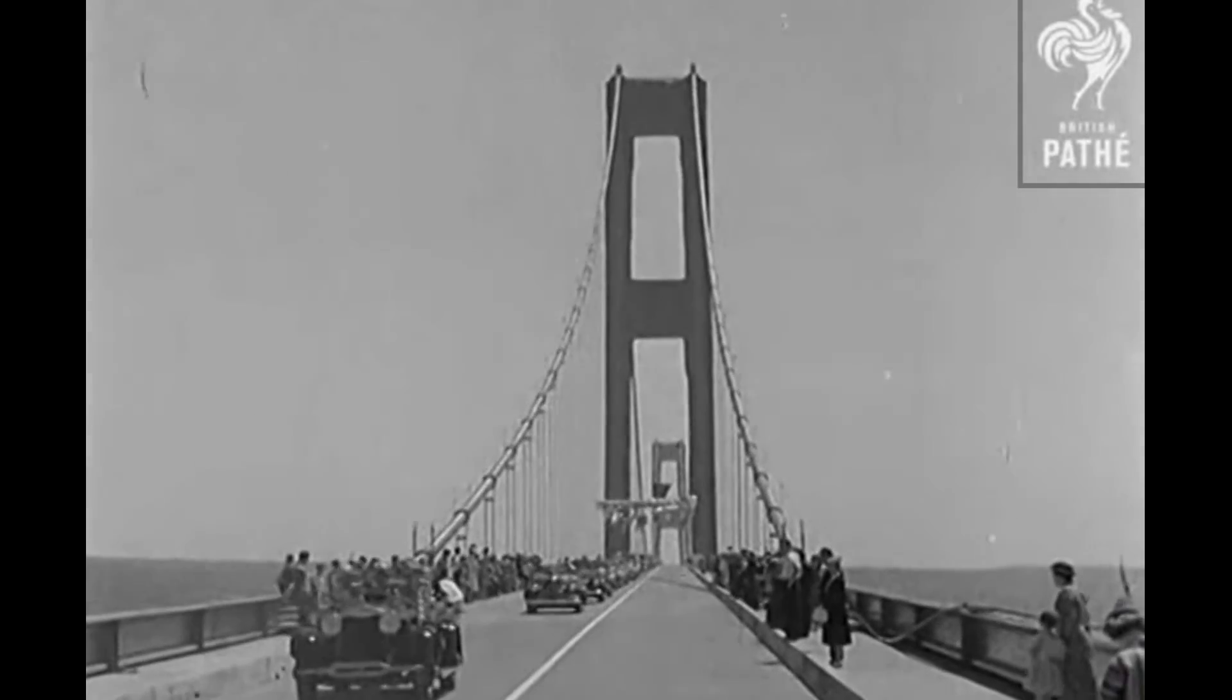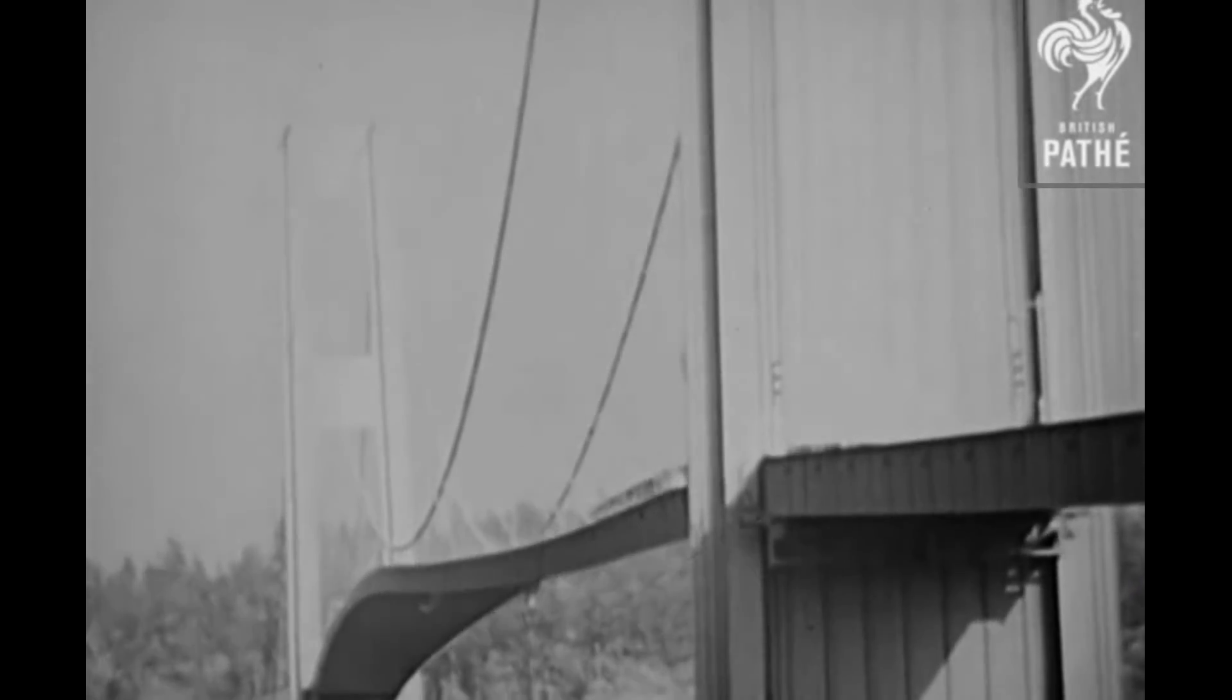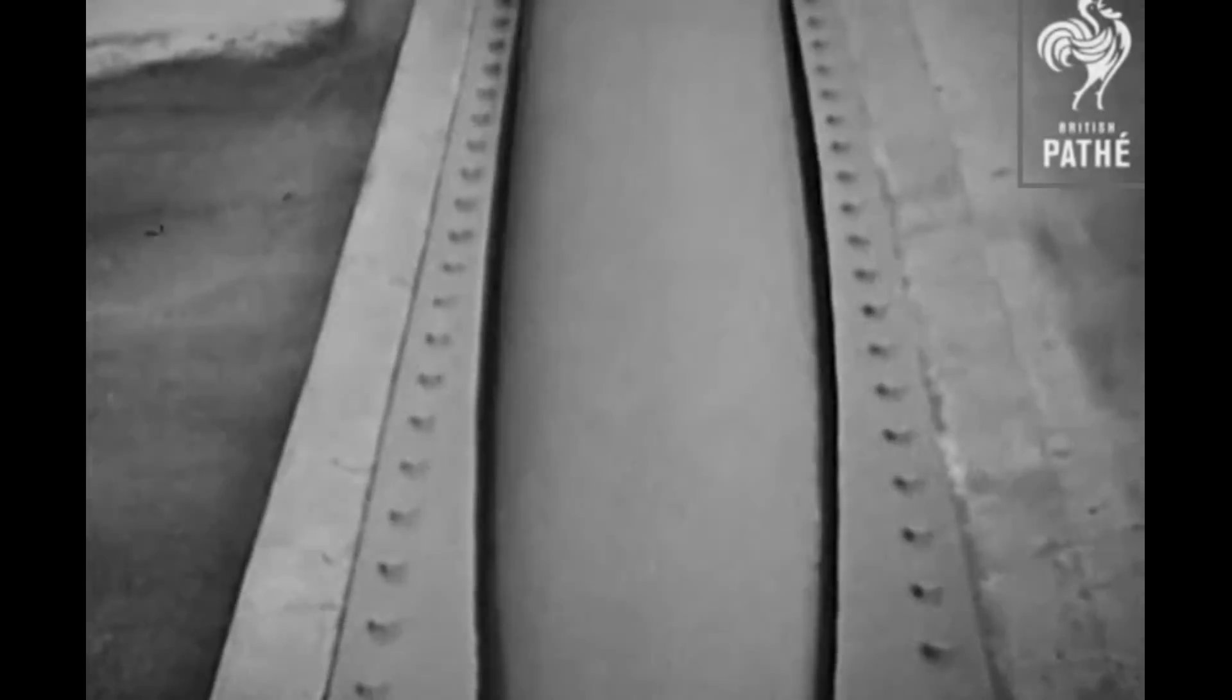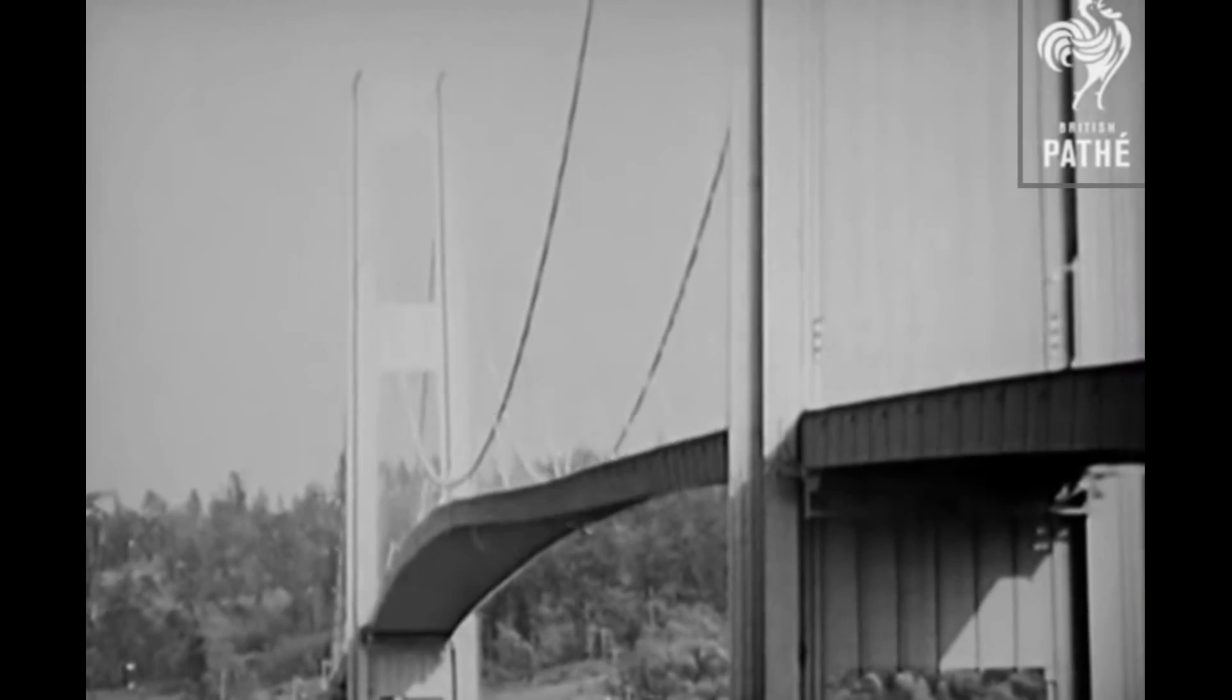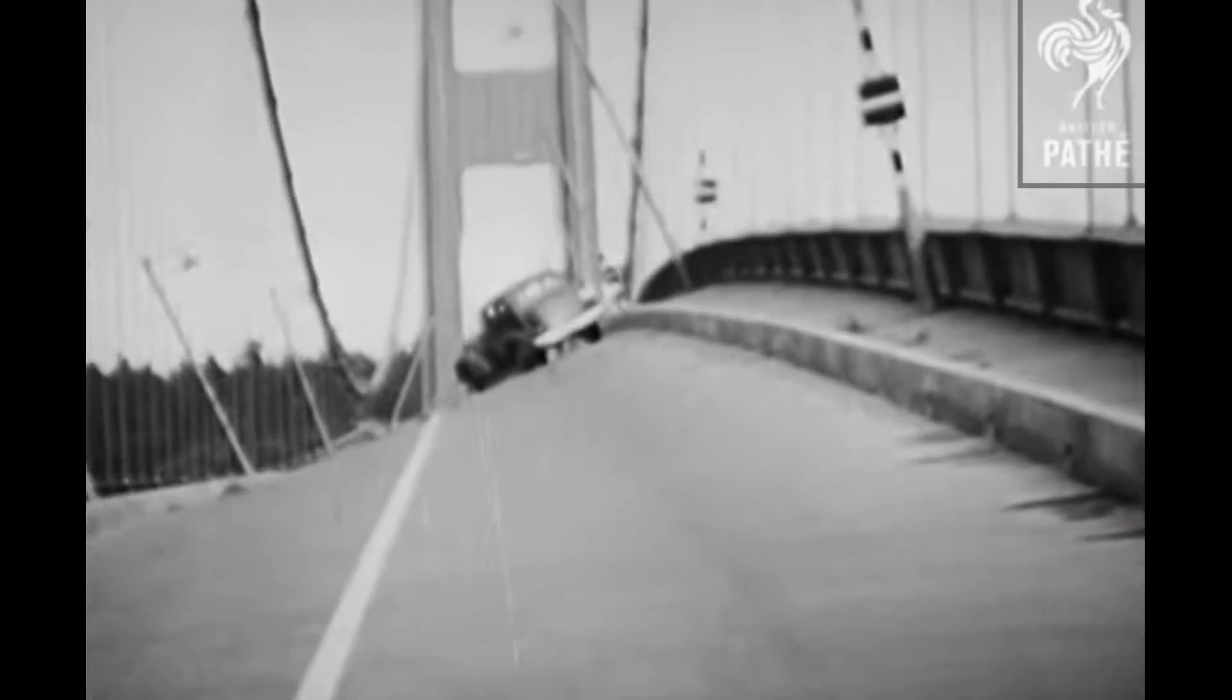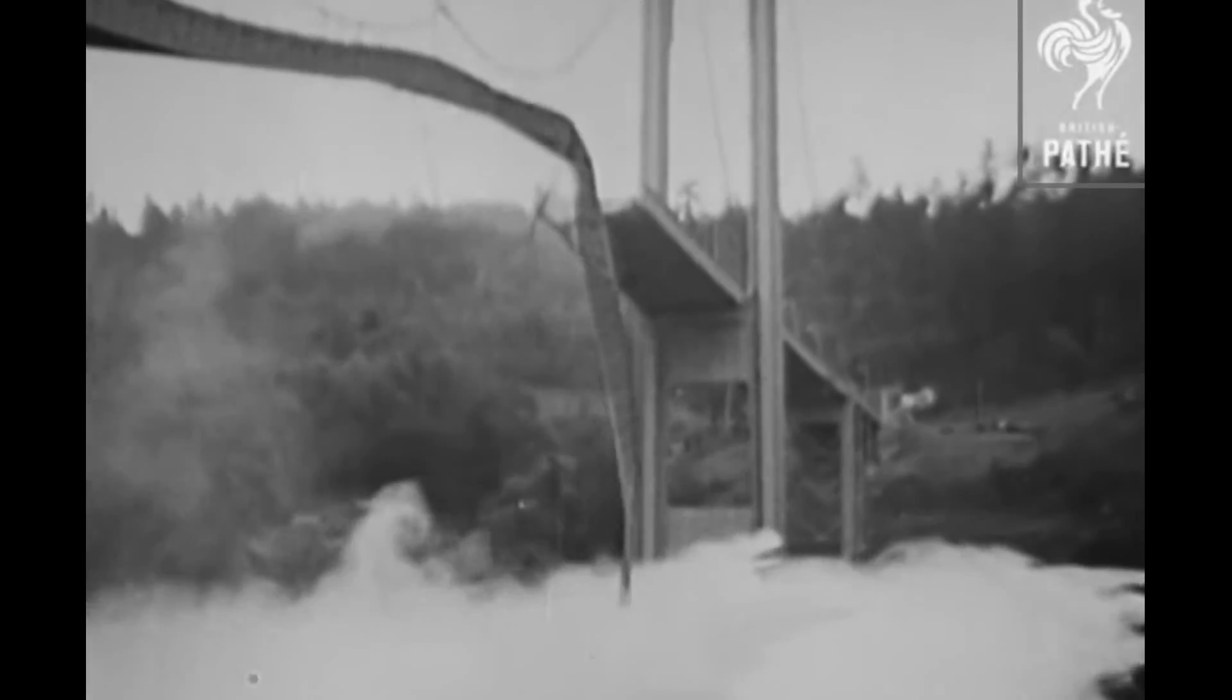Tacoma Bridge, Washington, opened only a few months ago, was built at a cost of over six million dollars. But misfortune overtakes the great structure. These are some of the most amazing pictures ever recorded by a newsreel. The actual collapse of the world's third largest suspension bridge. Only a 35 mile an hour wind is blowing, but this apparently sets up a rhythmic swinging of the bridge, which increases with each swing. Finally, the swinging road and the suspension cables give way and plunge into the water below. Fortunately, the only casualties were a car stalled on the bridge and a dog.